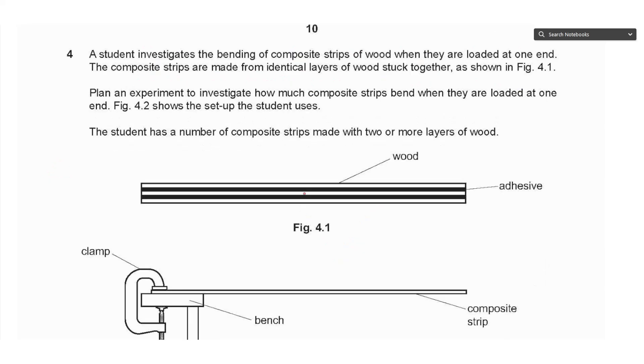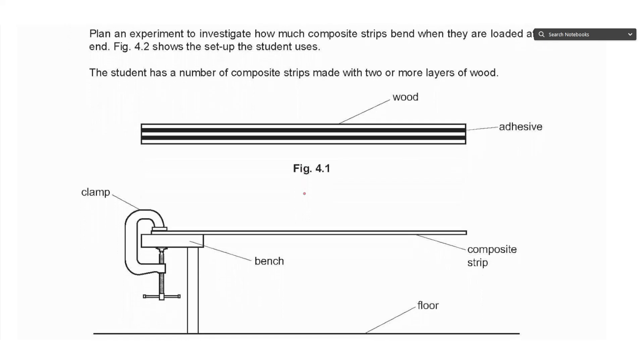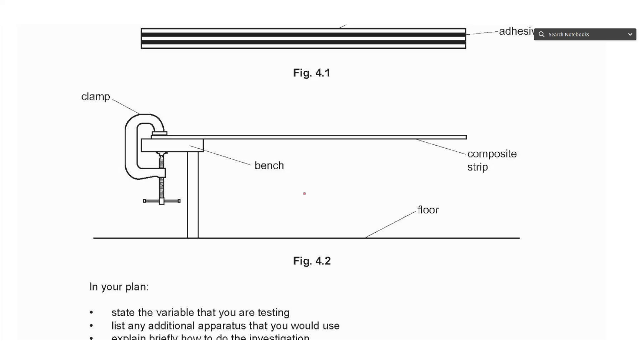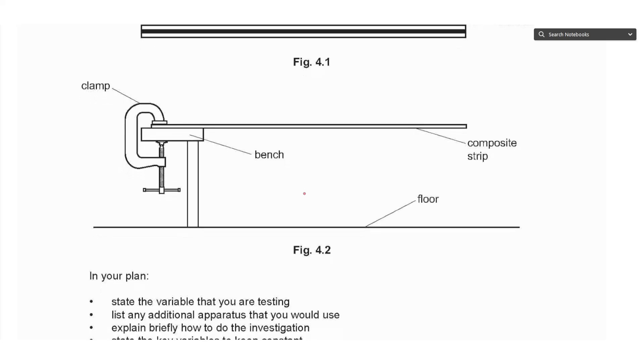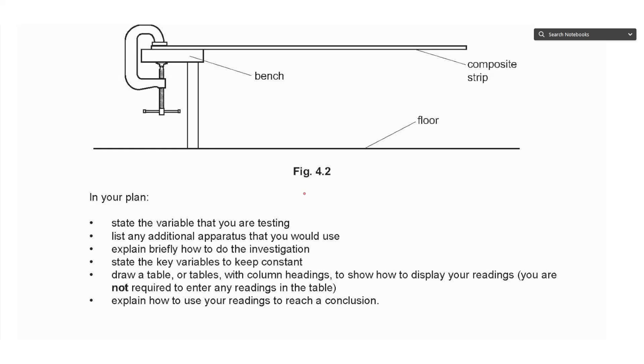Question 4 says a student investigates the bending of composite strips of wood when they are loaded at one end. The composite strips are made from identical layers of wood stuck together as shown in Figure 4.1. Plan an experiment to investigate how much composite strips bend when loaded at one end. Figure 4.2 shows the setup. The student has a number of composite strips made with two or more layers of wood, with a G-clamp holding the strip at the edge of a bench.